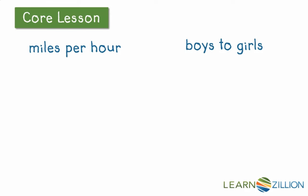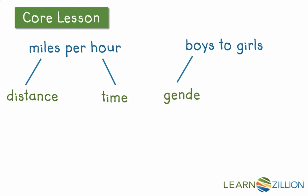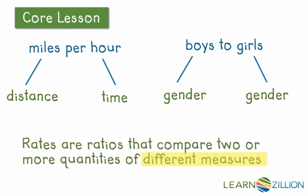The definition talked about different measures, so let's look at what each category measures. A mile measures distance. Hours measure time. But when we get to boys to girls, a boy is simply a category of gender, and so is a girl. Once we've broken down what's actually being measured, we can see that the rate miles per hour is measuring something different — distance is different from time — whereas boys to girls, while the categories seem different, they're not different measures. They're both measures of gender.